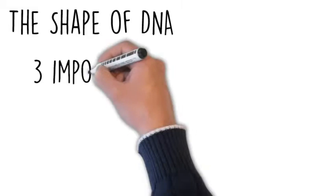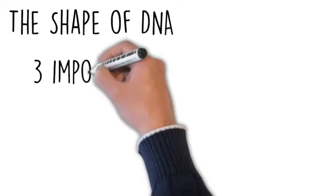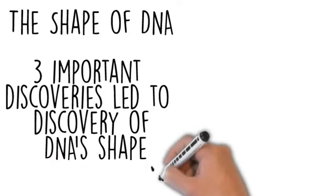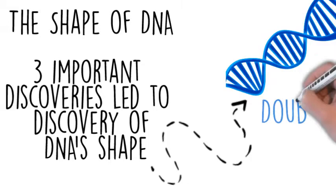Now, there were three different important scientific discoveries before we found the shape of DNA. Through the course of those three experiments, it was determined finally that DNA was in the shape of a double helix.